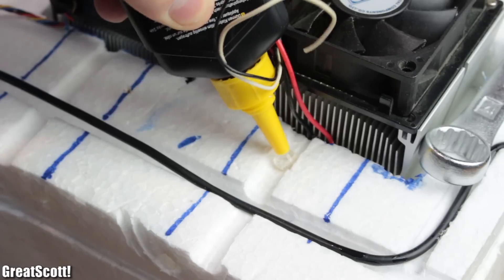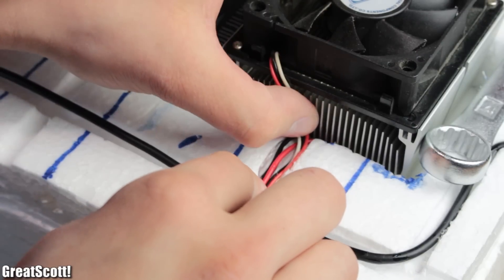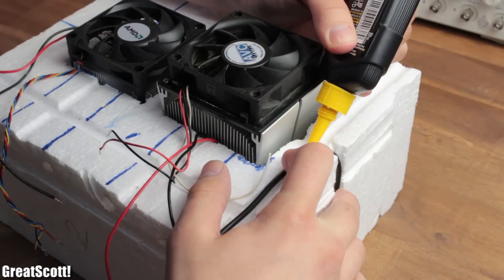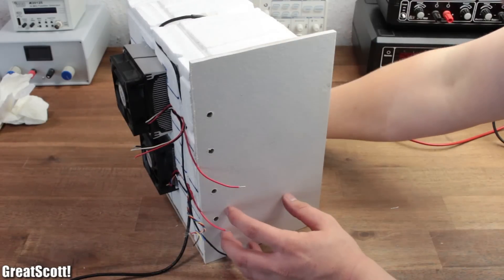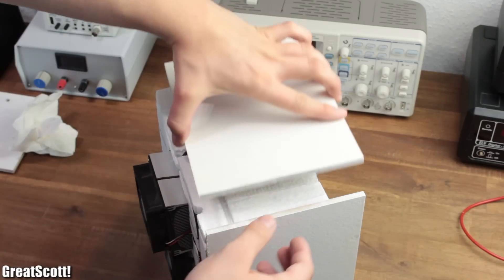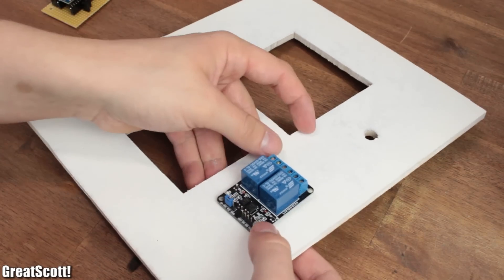The procedure should be clear by now. Next, I secured the Peltier, fan, and sensor wires inside the cable ducts with the help of glue, which I then also used to secure the sides of the outer layer to the styrofoam sides.